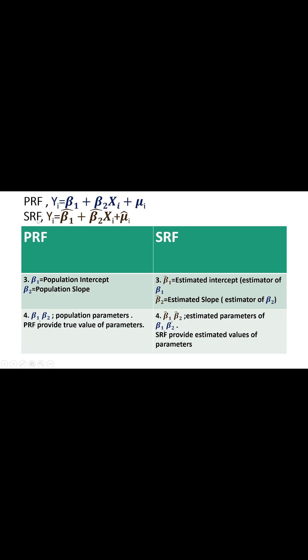Sample regression function is the subset of population regression function. It is represented as: y_i = β1-hat + β2-hat·x_i + μ_i-hat.